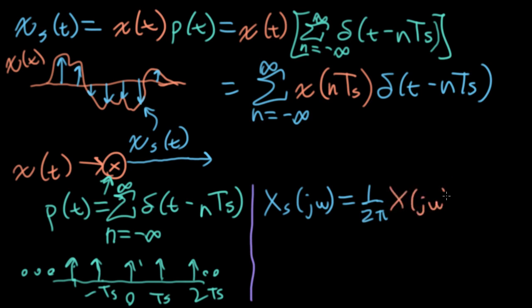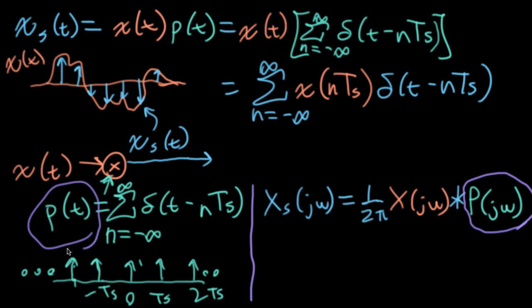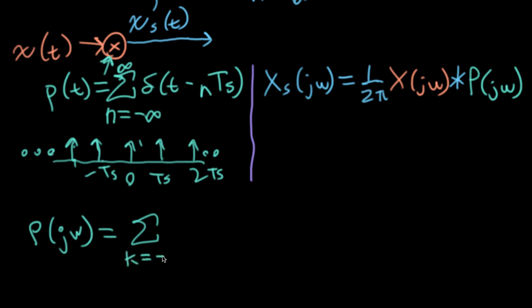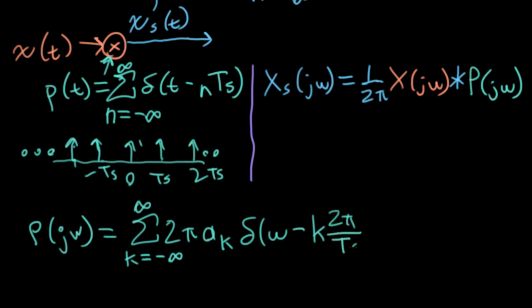So I have big X of j omega convolved with big P of j omega. Now it's a question of figuring out what the Fourier transform of this impulse train is — what is big P of j omega? If you look at the lecture from a couple of lectures ago, we computed what this is for a generic periodic signal, and this is certainly a periodic signal. We said that the Fourier transform was the sum over k of 2π times the Fourier series coefficients ak times a delta function at omega minus k times 2π over capital TS. I've usually written this as T0, but here I'm writing it with an S to emphasize that this is the sample period.